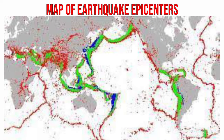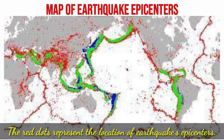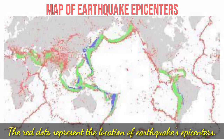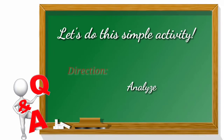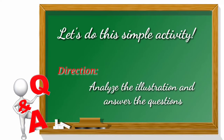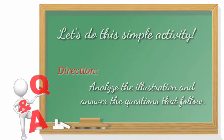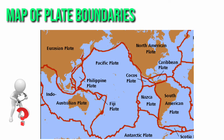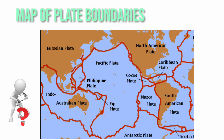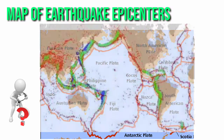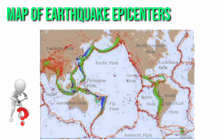Let's take a look at this picture showing the distribution of earthquakes around the world. The red dots represent the location of earthquake epicenters. What do you notice? Before we discuss this, let's ponder on this simple activity. If we have the map of the lithospheric plates and place the map of earthquake epicenters on it, what do you observe?